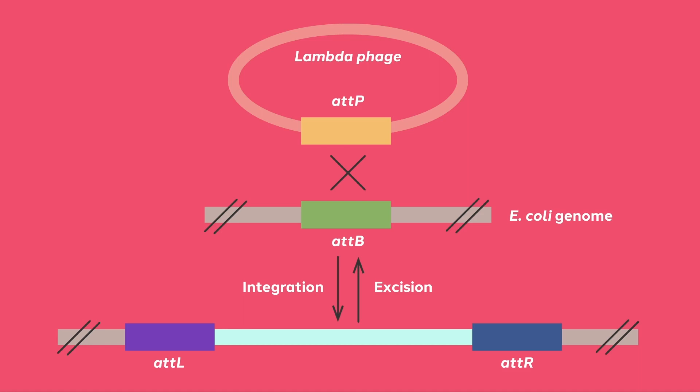In this diagram, you can see that the integration system involves specific DNA sequences found on the Phage at P sites, as well as sites found on the bacterial genomic target at B. Recombination between the B and P elements results in new recombination sequences flanking the inserted Phage DNA.